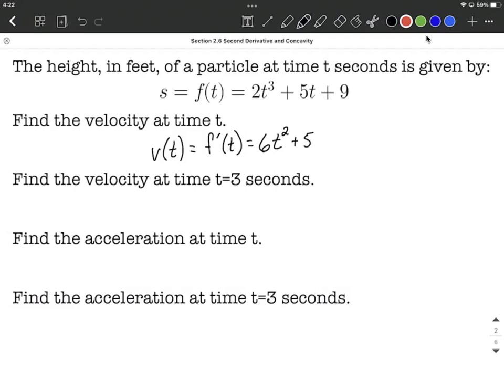Next, let's evaluate this. Let's find the velocity at 3 seconds. So f prime of 3. Evaluating this, we're going to substitute a 3 in for our t, which is going to work out to be 6 times 9 plus 5. So 54 plus 5 works out to be 59.